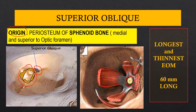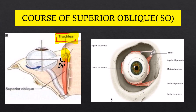Another important point to remember about the superior oblique muscle is that it is the longest and thinnest among all the extraocular muscles, with a length of about 60 millimeters.